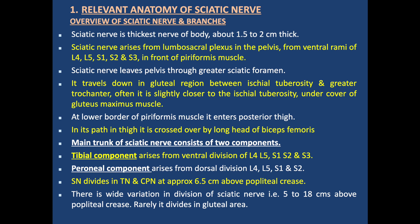The sciatic nerve travels down in the gluteal region between the ischial tuberosity and greater trochanter — often slightly closer to the ischial tuberosity — under the cover of the gluteus maximus muscle, at the lower border of the piriformis muscle. It then enters the posterior thigh.